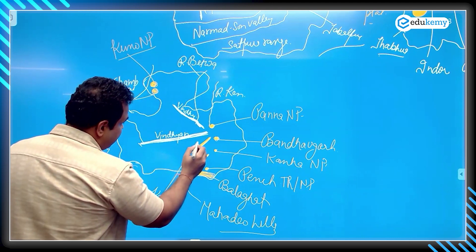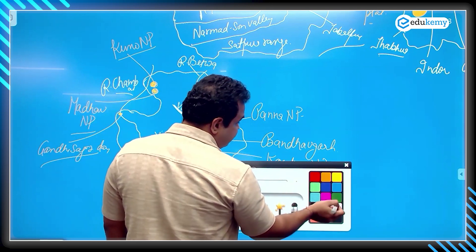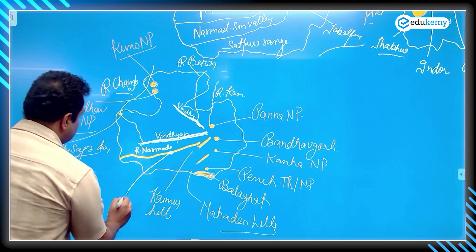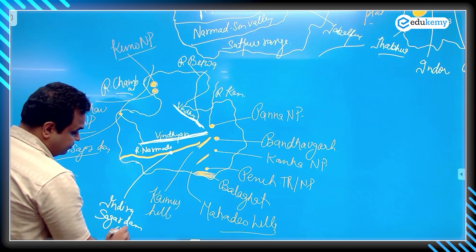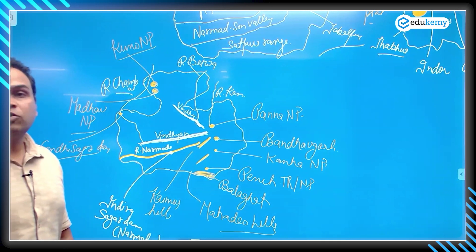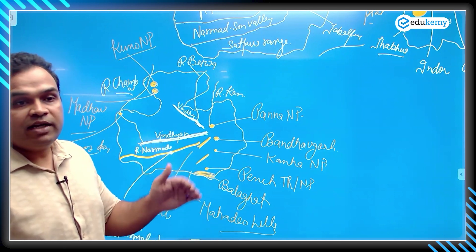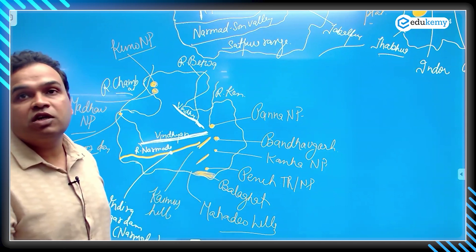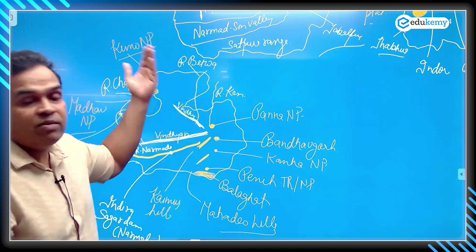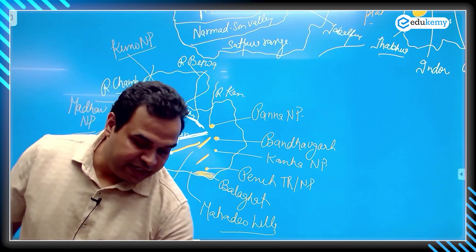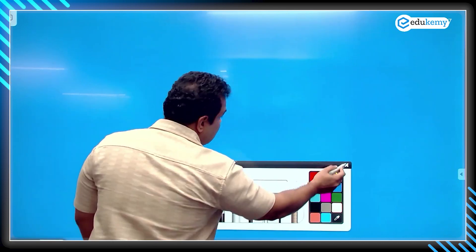River Narmada also has one dam. These are some of the important locations that could be helpful in prelims. These days they are asking a lot of questions related to location matching, so you should have knowledge of north-to-south, east-west extension and how plateaus and rivers are flowing.